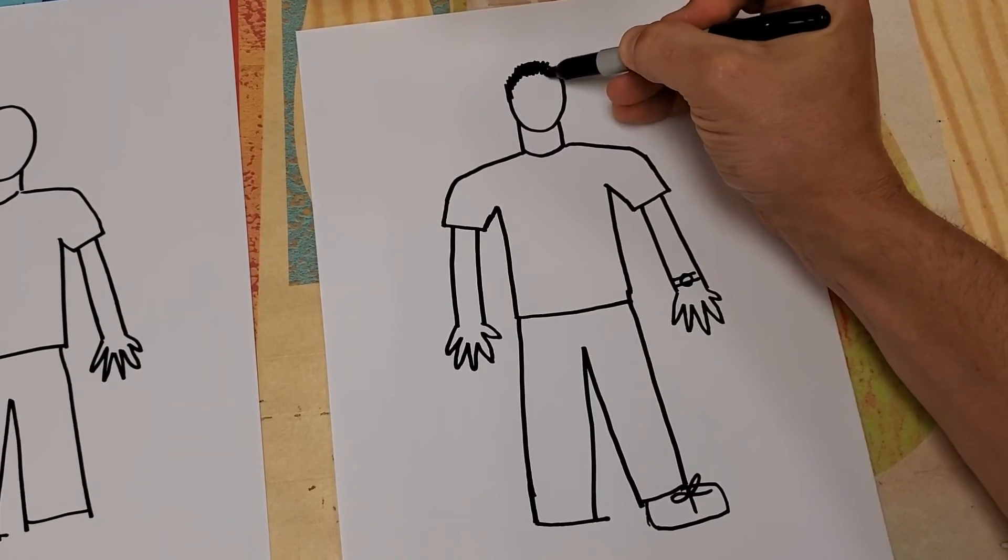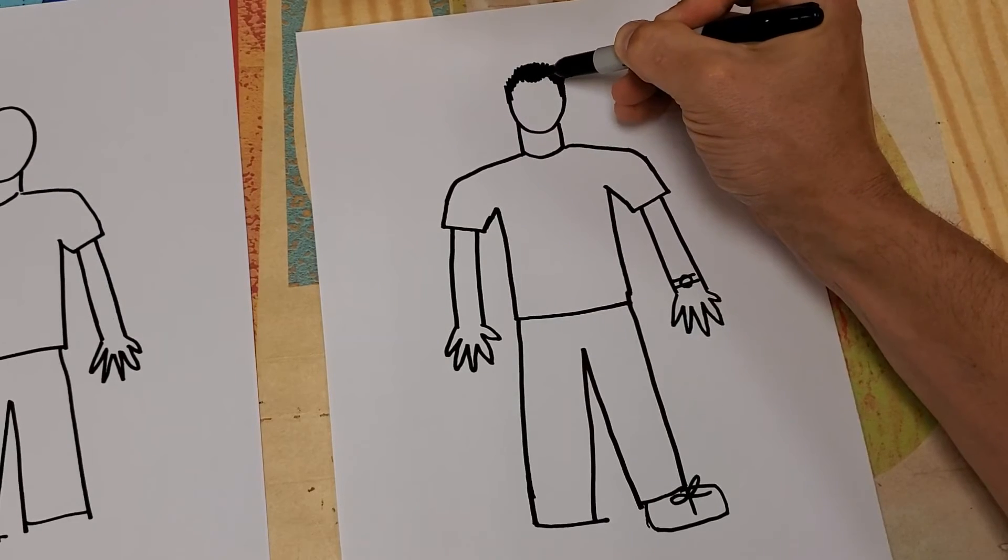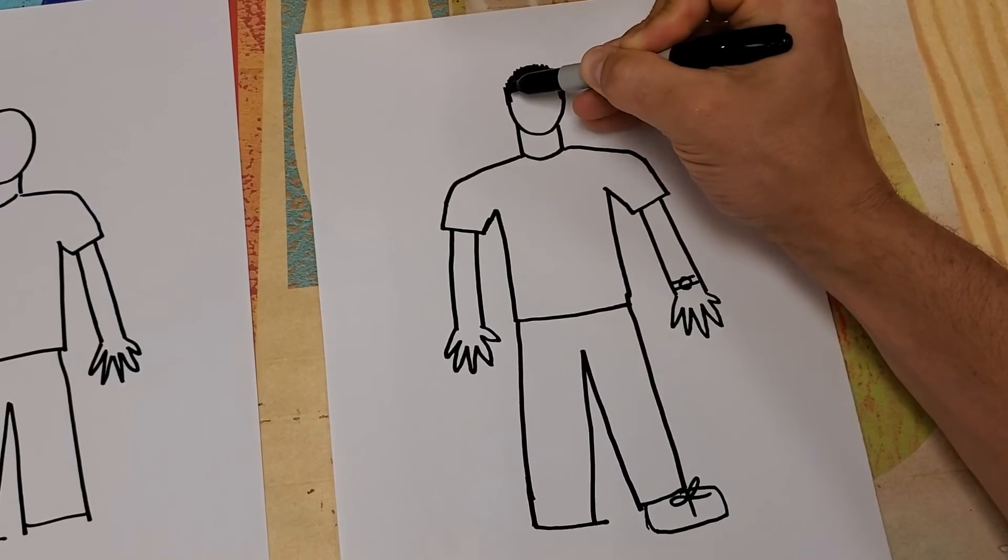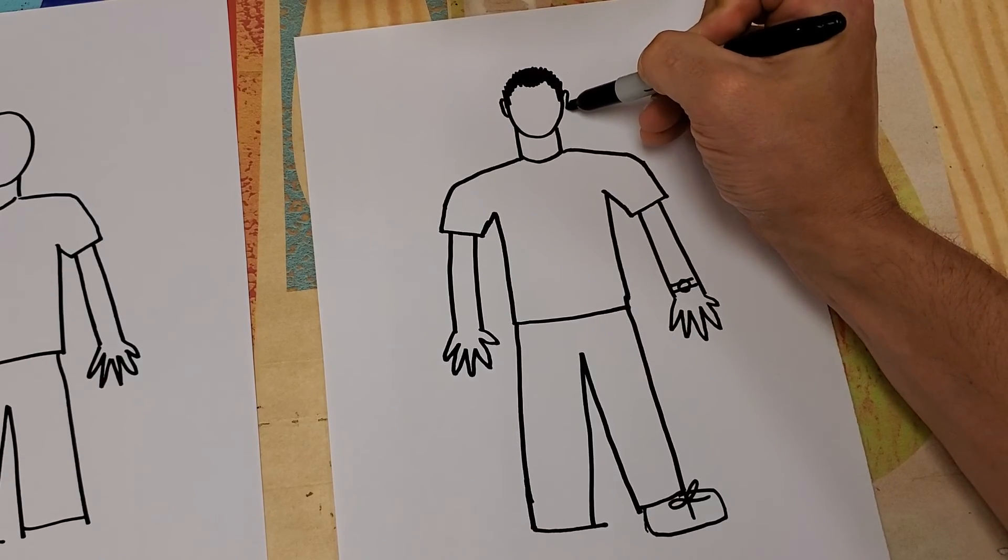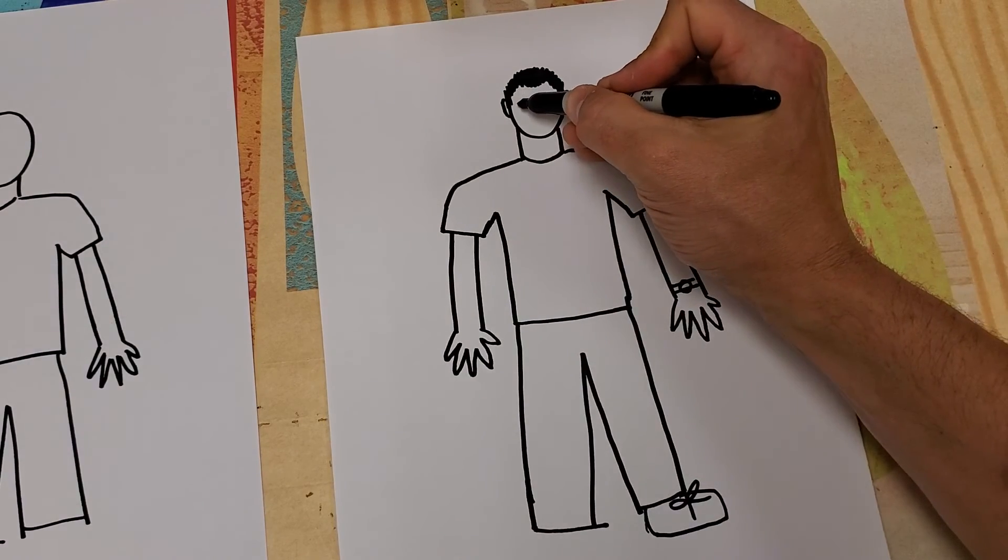All sorts of ways for hair to be. All sorts of types of lines that hair can be. I'm going to add two tiny lines here for ears that are really close to my face. And then let's talk about the eyes.